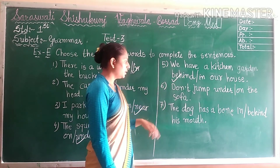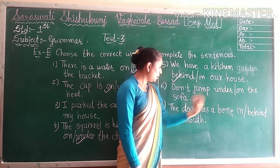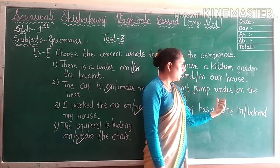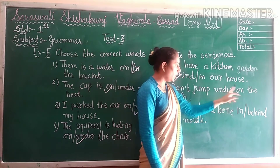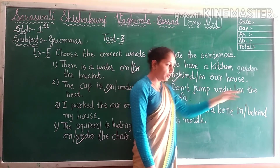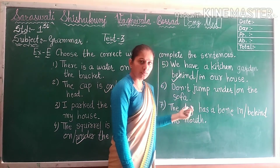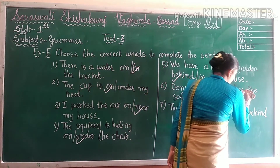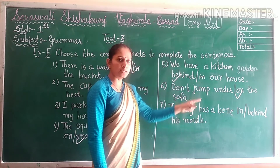Sixth number. Don't jump — blank — the sofa. Two options: UNDER or ON. So our answer is: don't jump on the sofa. You have to take the word ON.